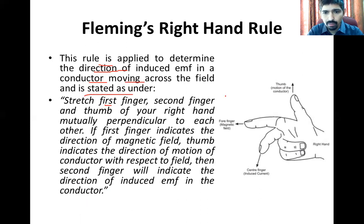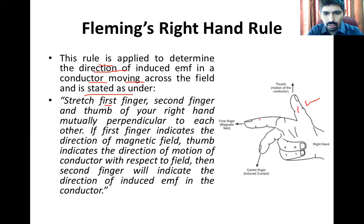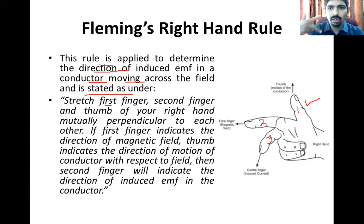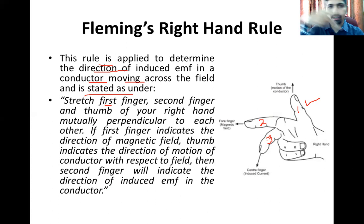We have three fingers to find the direction using Fleming's right-hand rule. One is the thumb, the second is the first finger adjacent to the thumb, and the next is the middle finger. We set these three fingers at 90 degrees to each other — they must be mutually perpendicular.